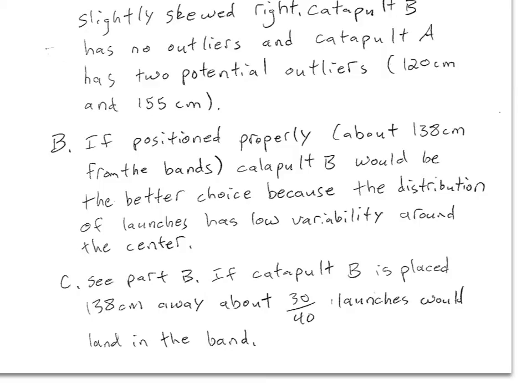Now, when I actually counted, so I figured the band was about 5 centimeters on either side of the target line. So I counted how many of catapult B's launches were within 5 centimeters of the median, and I counted about 30 out of 40 launches would be in the band.